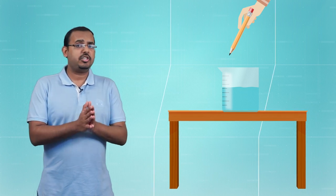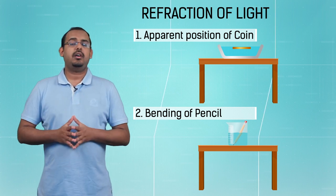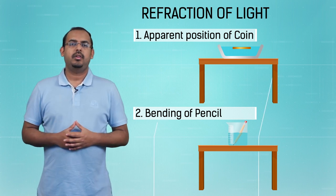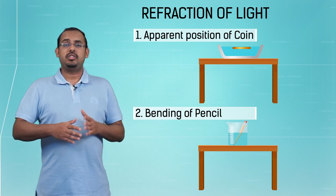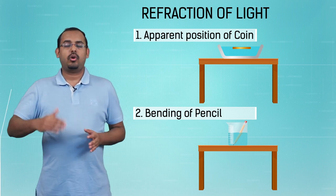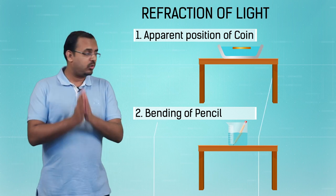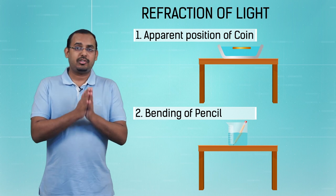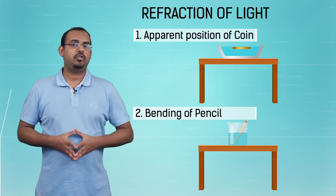How did that happen? Did the pencil change its shape when it was put inside the beaker? This does not make any sense. Both these phenomena can be explained by the refraction of light. In both these cases, the bending or moving out of shape was neither done by the coin nor the pencil. It was the light coming from these objects that actually bent, thus changing our perception of the shape or position of these objects.